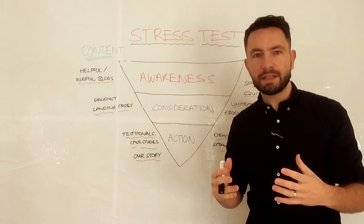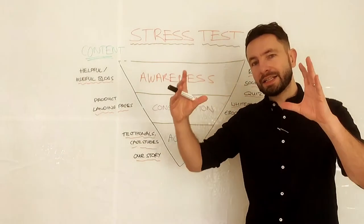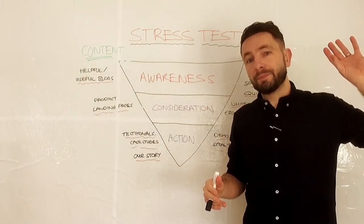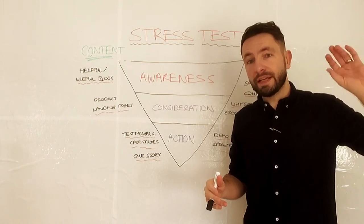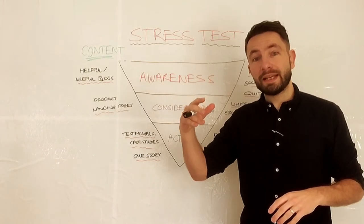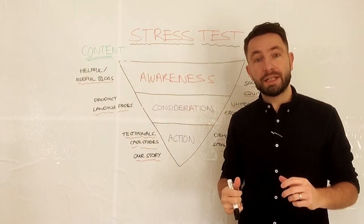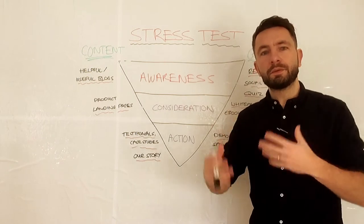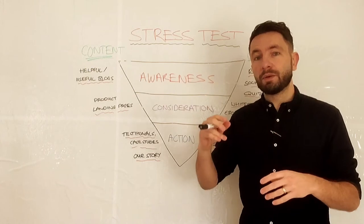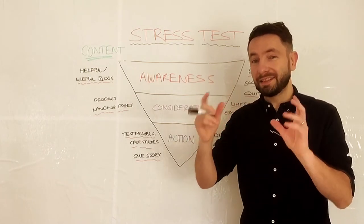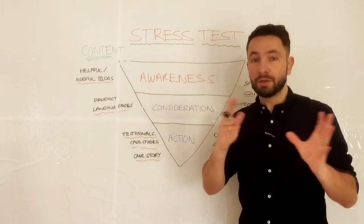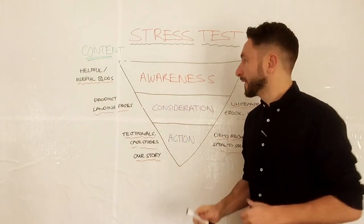The objective of this model is to find, at each stage of the funnel — awareness through consideration and action — whether we have proper goals for each of those funnel stages, and then whether we have content specifically supporting users in those funnel stages. Quite often, even if you've been running a sophisticated digital strategy for some time, this simple exercise will find ways to do things differently or find gaps in your previous work.